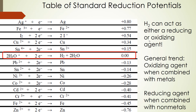Hydrogen gas can act as either a reducing or oxidizing agent. Right here in the middle of the table, we have 2H₃O⁺ + 2e⁻ → H₂ + 2H₂O. Under standard conditions, that standard reduction potential is set to 0. That's basically the midpoint, and every other standard reduction potential is measured relative to this reaction.